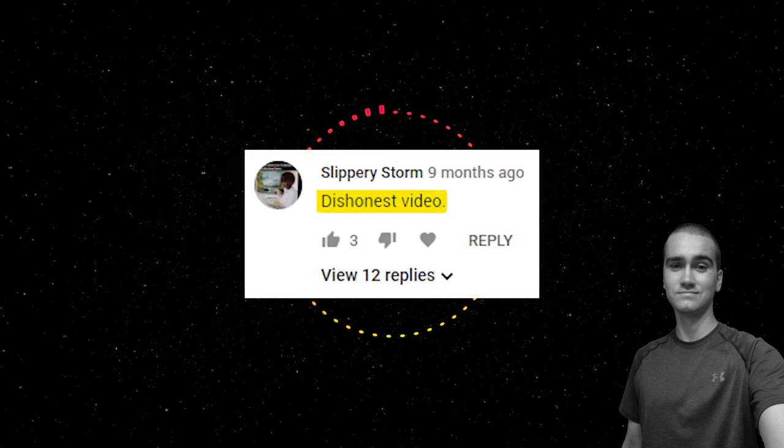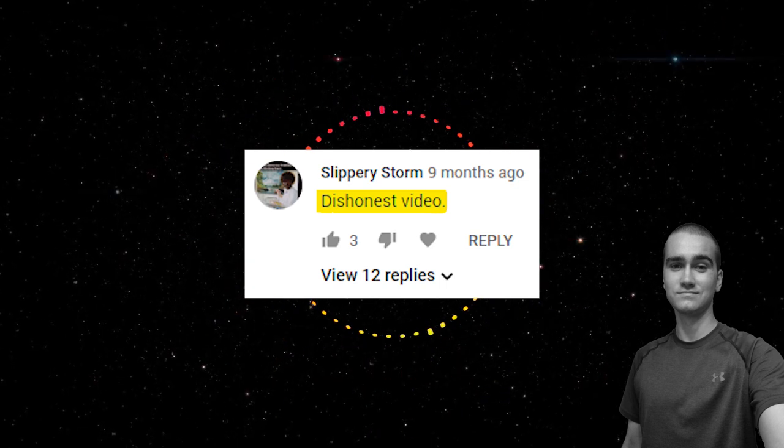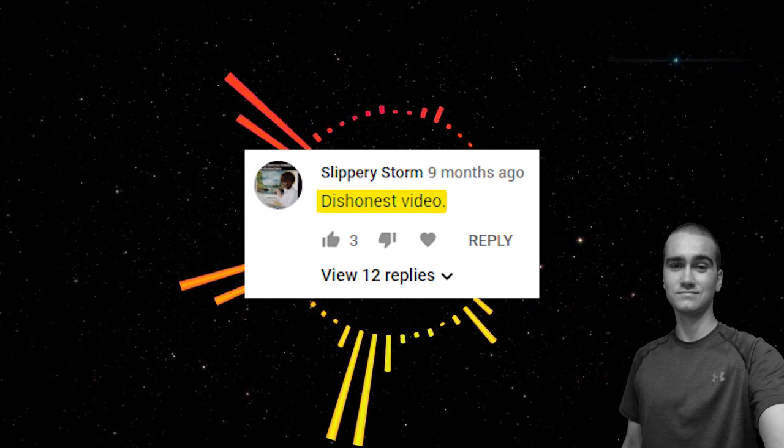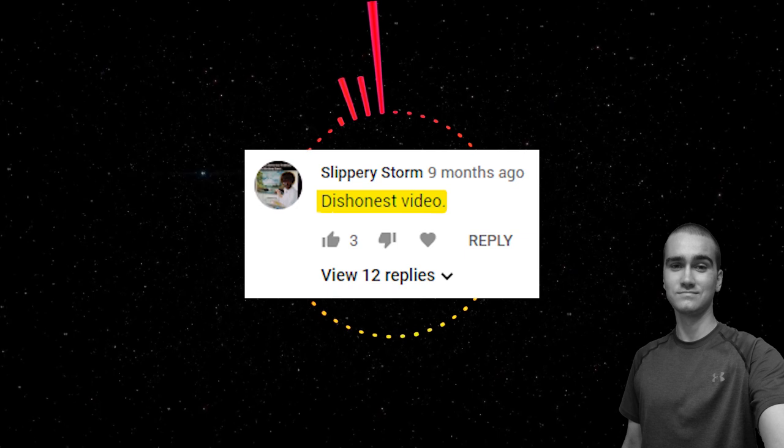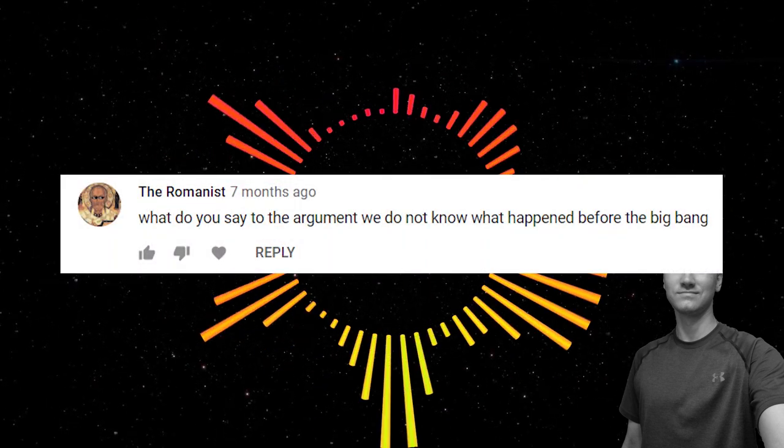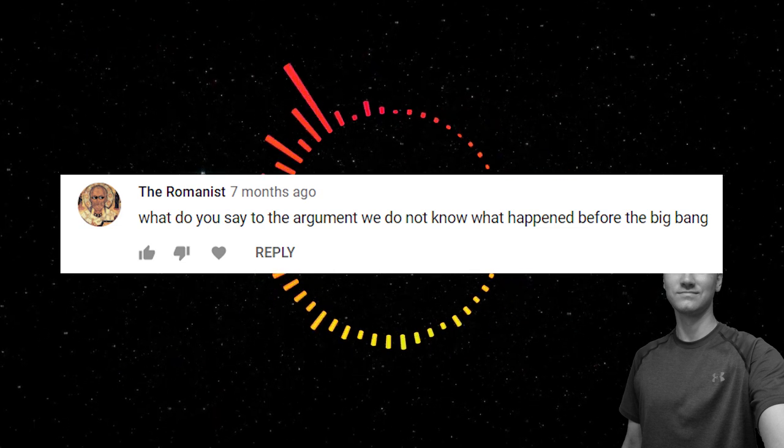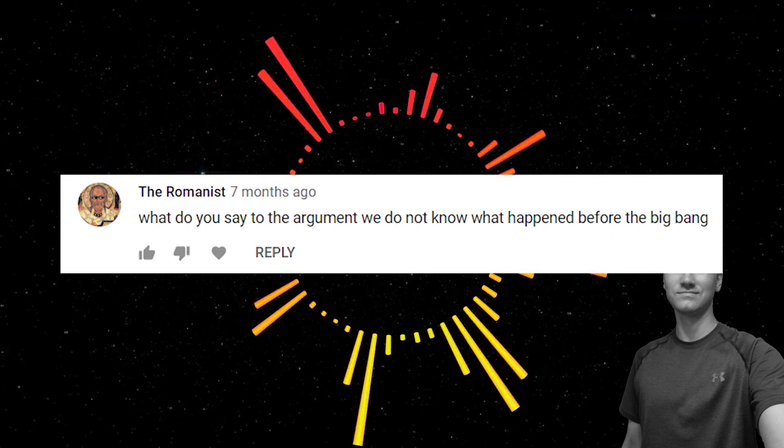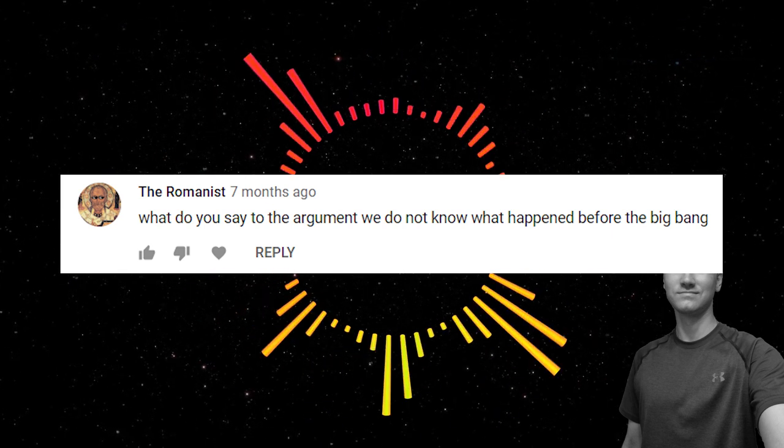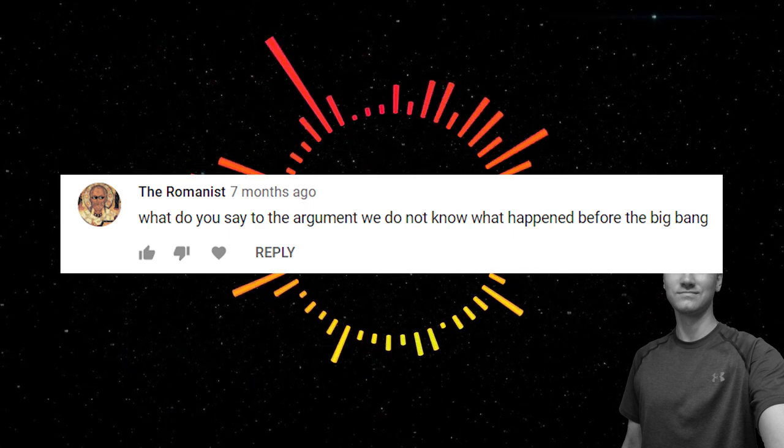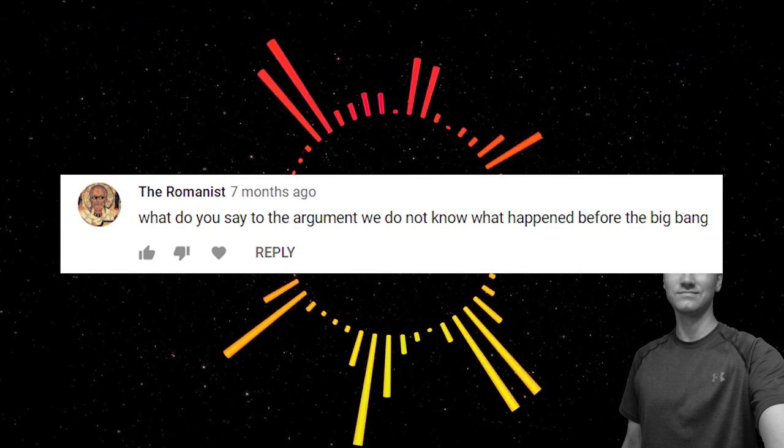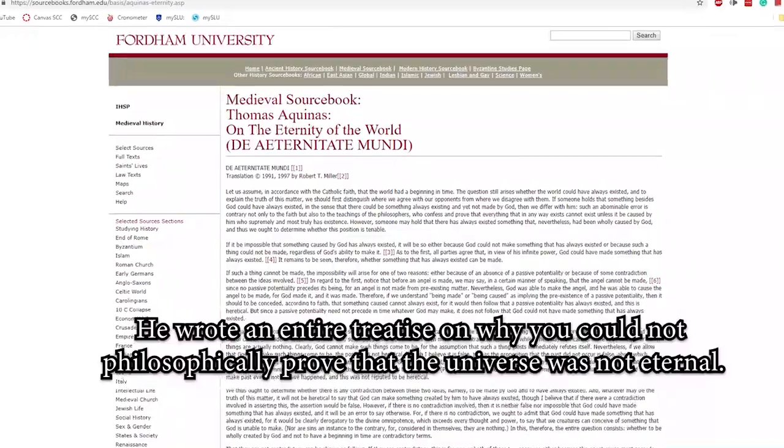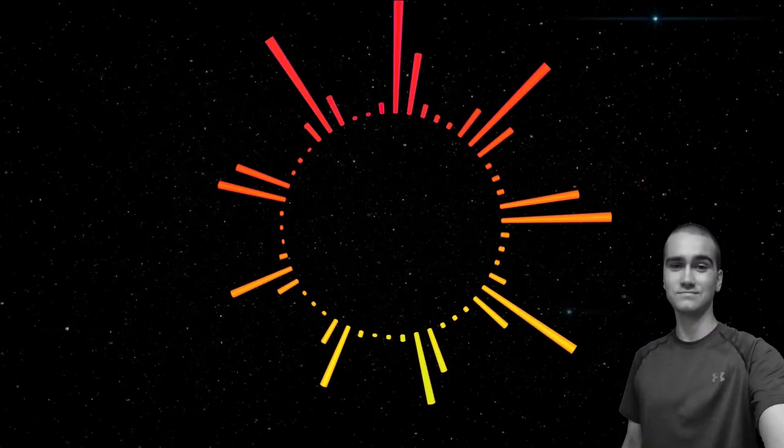And Slippery Storm said, Dishonest video, which I'm confused on how I'm supposed to take that since he could be saying that the video I was responding to was dishonest or that my video was dishonest. This is a prime example of why clear terms and unambiguous premises are so essential. Now, this man named the Romanist, and Romanism, by the way, is a derogatory term for Catholics. It's just not really used anymore. But I don't know if that's why he's called the Romanist or what the deal is. But anyway, his name is the Romanist. He asks, What do you say to the argument we do not know what happened before the Big Bang? I would respond by saying that it is irrelevant because the essentially ordered causal series shows that something has to be actualizing things every moment of time. Thus, I really don't care what happened 13.7 billion years ago, or even 10 days ago, because it is irrelevant to my argument. And Aquinas didn't even think you could prove the universe was finite in age. Therefore, it clearly has no power over his argument.